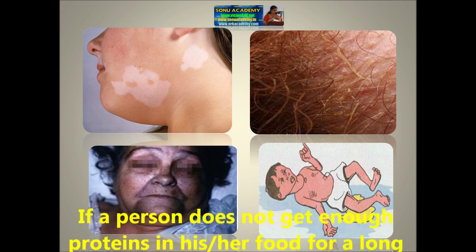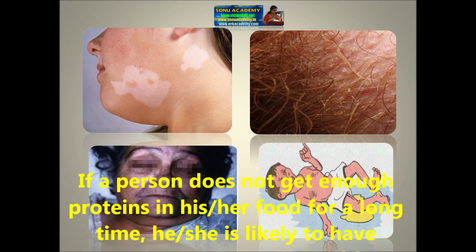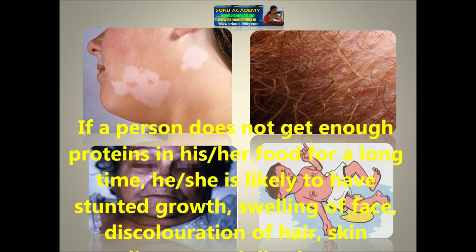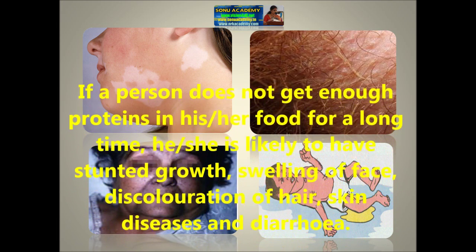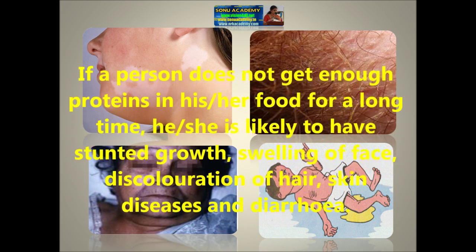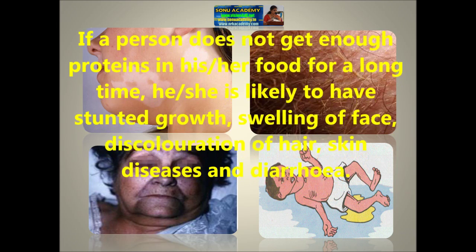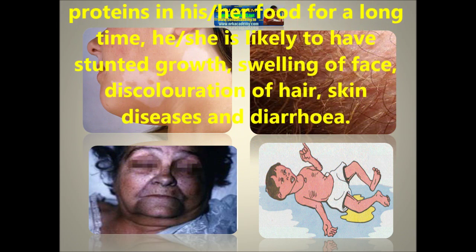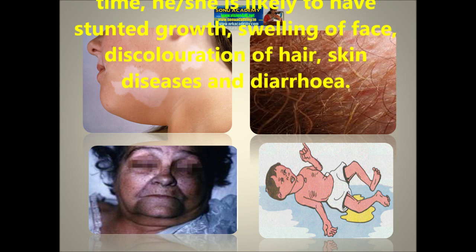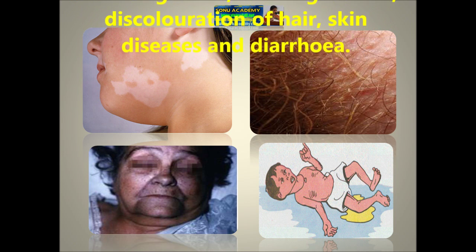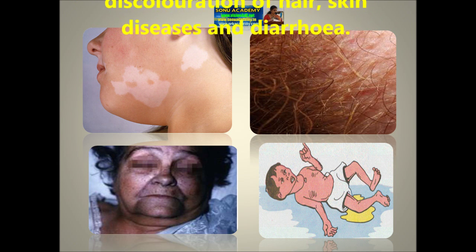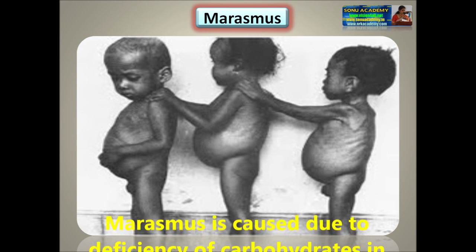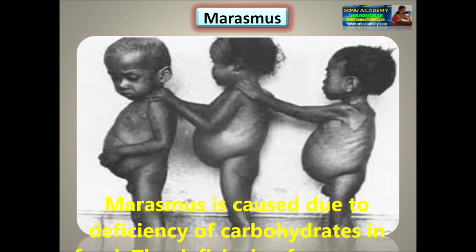If a person does not get enough proteins in his or her food for a long time, he or she is likely to have stunted growth, swelling of face, discoloration of hair, skin diseases, and diarrhea. These are some of the examples of deficiency diseases. Let us see some of the deficiency diseases here.